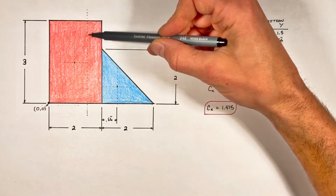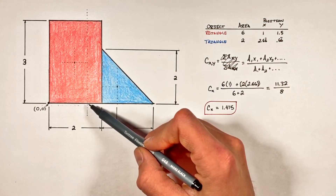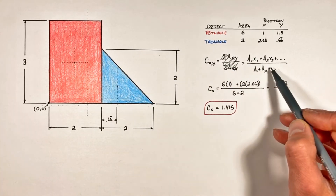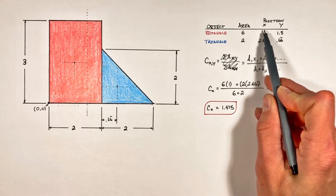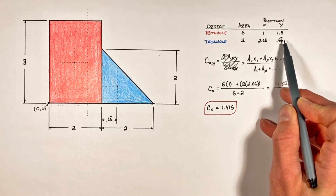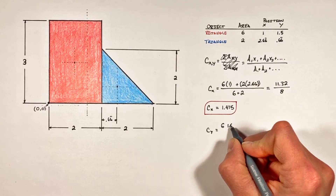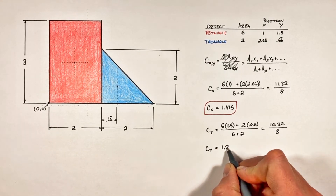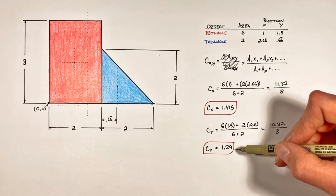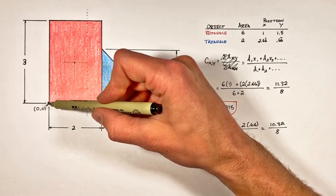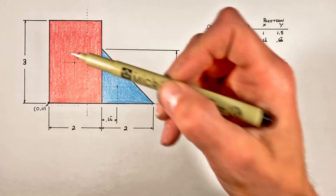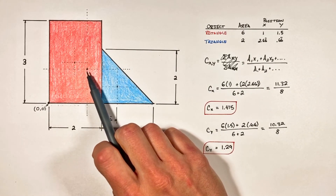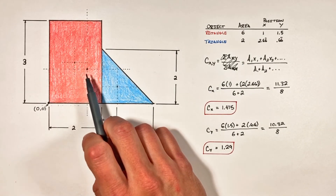Now let's solve for the center of area vertically. We use the same equation again, except this time we plug in the vertical positions rather than the horizontal ones. We find that vertically the center of area is 1.29 above the reference point. So graphically, our center of area lies right here.